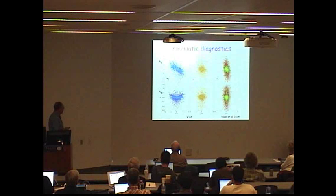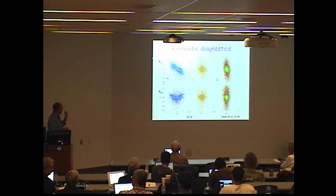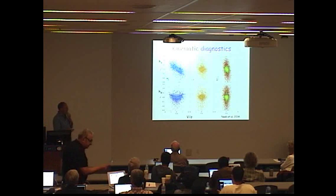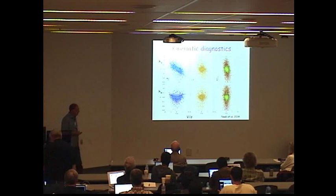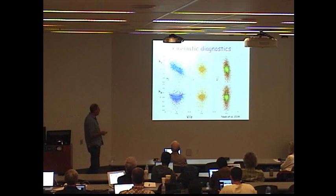They looked at these higher order moments of the velocity line of sight velocity, so that's the h3 and h4 as a function of v over sigma. Here are their six classes and the distributions that they have in these types of diagrams.